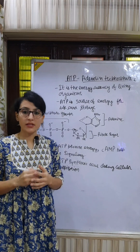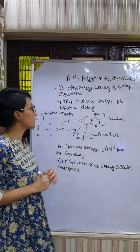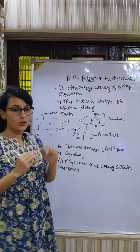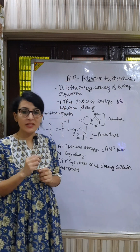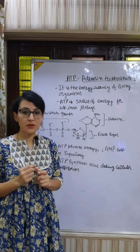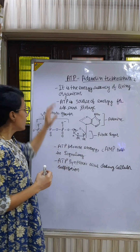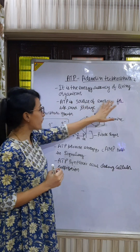Today I am going to discuss about ATP, which is adenosine triphosphate. ATP is the energy currency of all living organisms, meaning energy is produced in the form of ATP. It is a source of energy for immediate use and for energy storage.